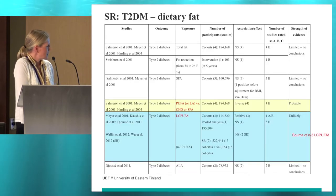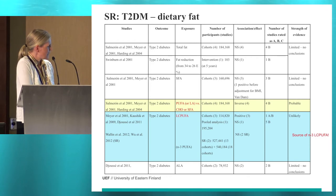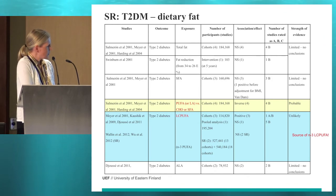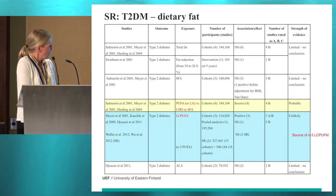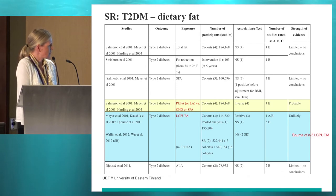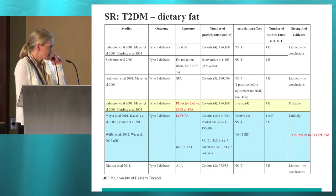Regarding type 2 diabetes risk, it was found that polyunsaturated fat or linoleic acid itself, as compared to carbohydrates or saturated fat, has an inverse association with type 2 diabetes risk, and the evidence was considered as probable. Regarding long-chain omega-3 polyunsaturated fatty acids, the conclusion was unlikely, and this needs more specific attention.